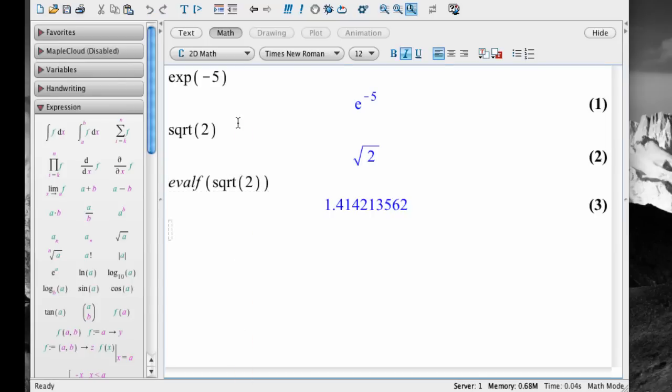To find the natural logarithm, we use ln. Here's the natural logarithm of 7, for instance. Type ln, open parenthesis, 7, close parenthesis, and hit enter. And here's the natural logarithm of e to the fifth, which is of course 5. But notice that Maple does this simplification automatically.